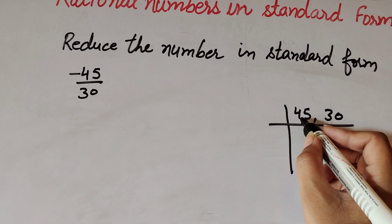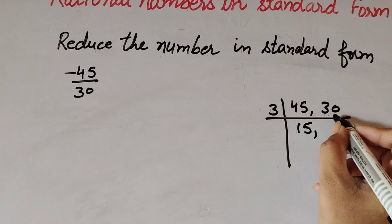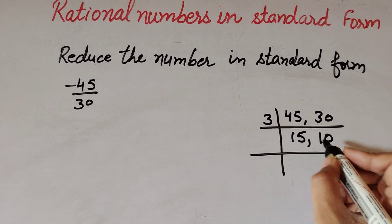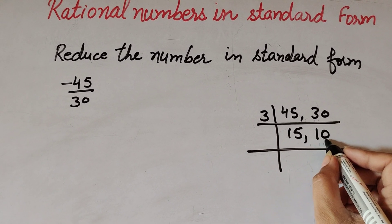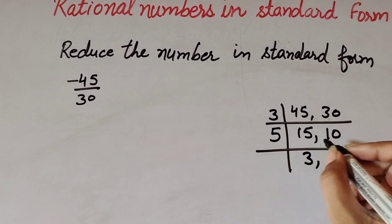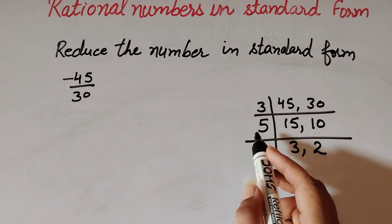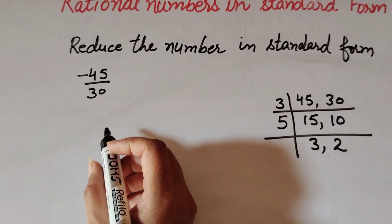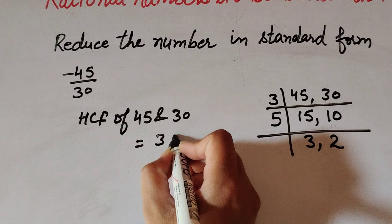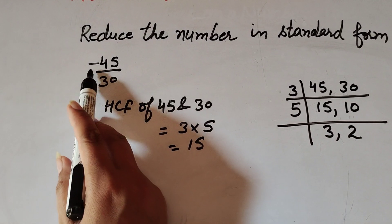45 divided by 3 gives 15, and 30 divided by 3 gives 10. Now 15 is divisible by 3 but 10 is not, so we use another number. 15 divided by 5 gives 3, and 10 divided by 5 gives 2. Now 3 and 2 have no common factor. So the HCF of 45 and 30 is 3 multiplied by 5, which equals 15.